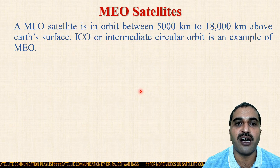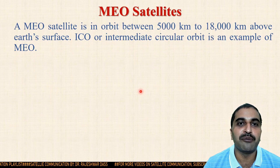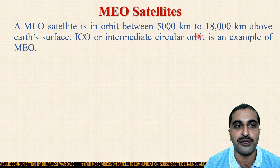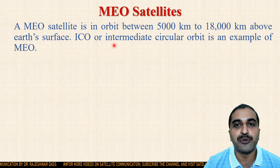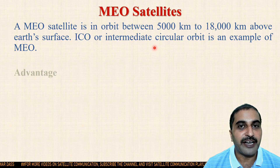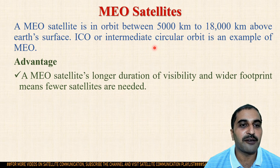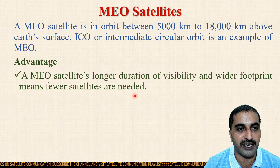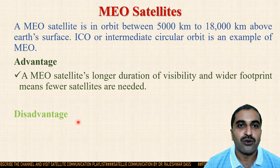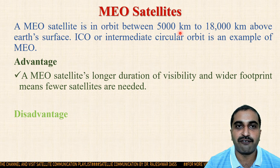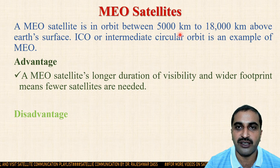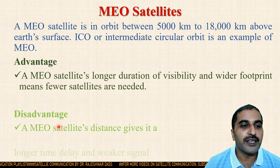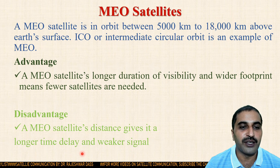Next are MEO satellites. MEO stands for medium earth orbit. Satellites available in MEO orbits are known as MEO satellites. A MEO satellite orbits between 5000 km to 18,000 km above the earth's surface. ICO, or intermediate circular orbit, is an example of MEO satellites. The advantages of MEO satellites include longer duration of visibility and a wider footprint, meaning fewer satellites are needed in comparison to LEO satellites. The disadvantage is that MEO's greater distance from earth results in a longer time delay and weaker signal than LEO.